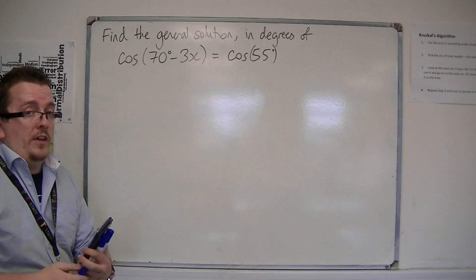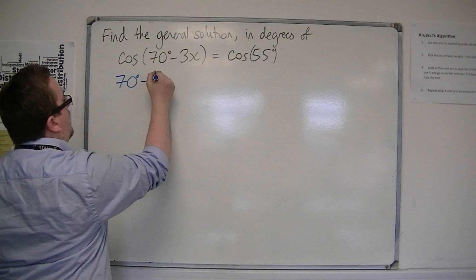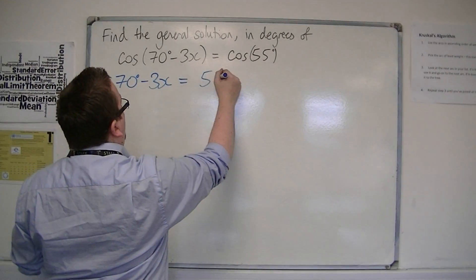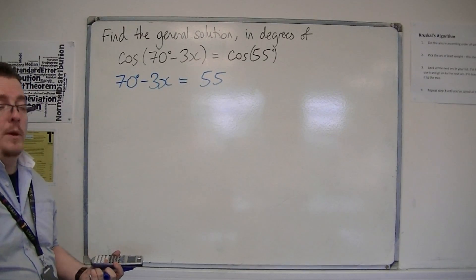We're going to inverse cosine both sides. So we're going to get 70 - 3x = 55, because if I inverse cosine, it just gets rid of the cosines on both sides.